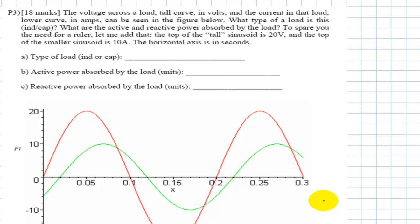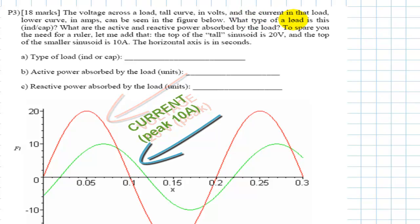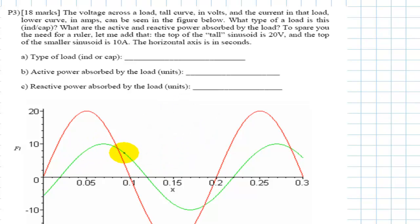Question 3 of the exam. The voltage across a load, the tall curve, the red one in volts, and the current in that load, the lower curve in amps, the green one, can be seen in the figure below. What type of a load is this one?